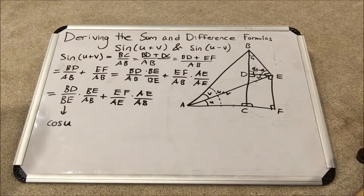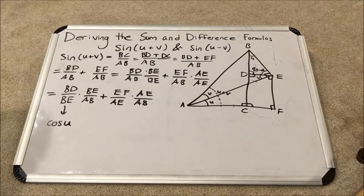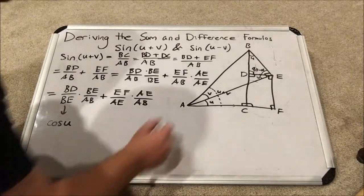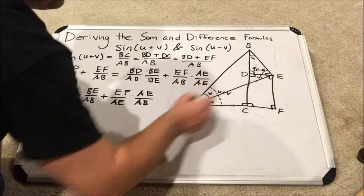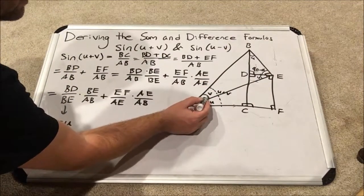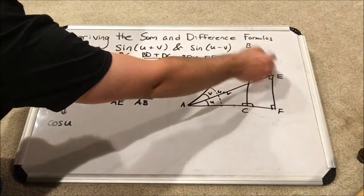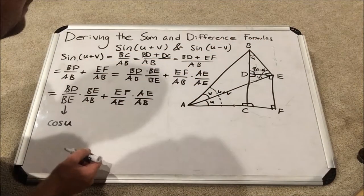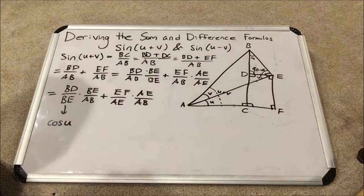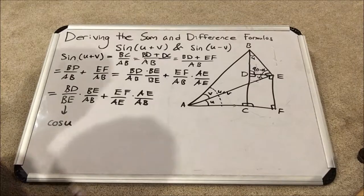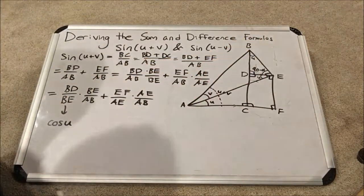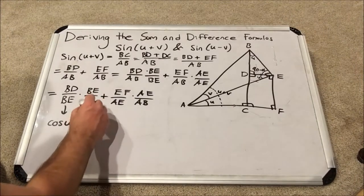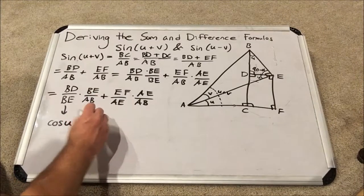Let's look at BE over AB. Now, we're looking at a giant triangle like this. And we have angle V here. So let's look. What would BE over AB be to angle V? It would be the sine of angle V. Check it out. Opposite over hypotenuse. So that represents the sine of V.